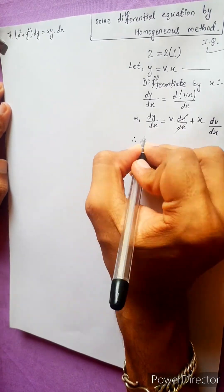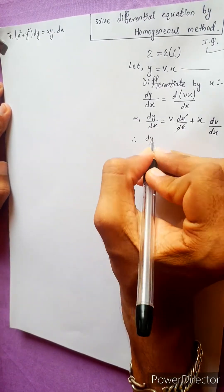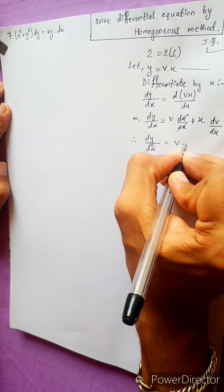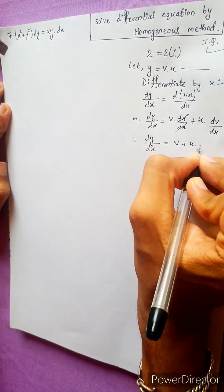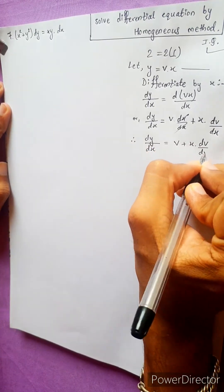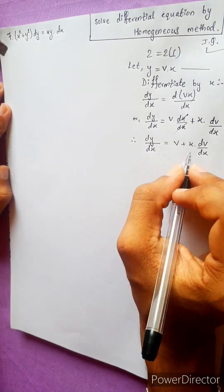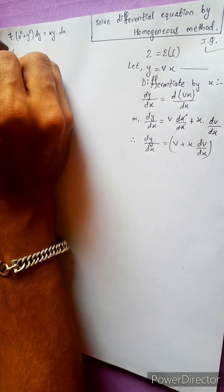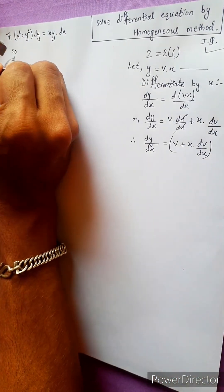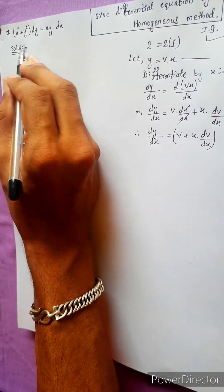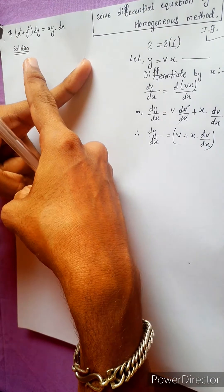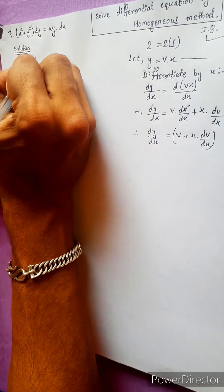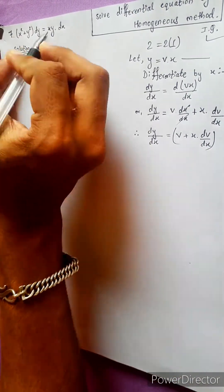Therefore dy/dx equals to v plus x·dv/dx. This is important. dy/dx — this means cross multiply by dx — it means dy/dx.